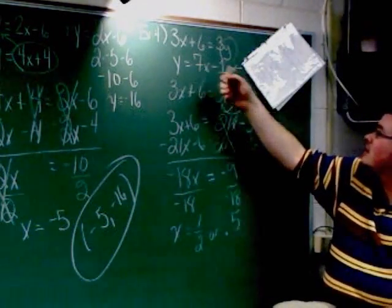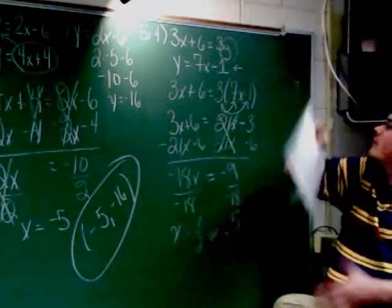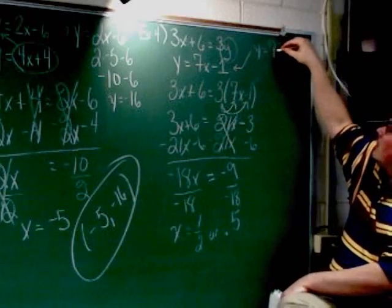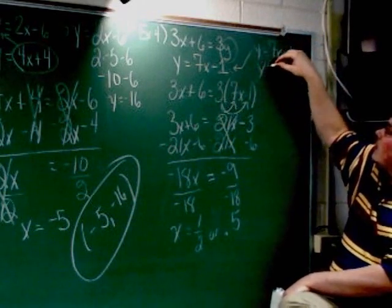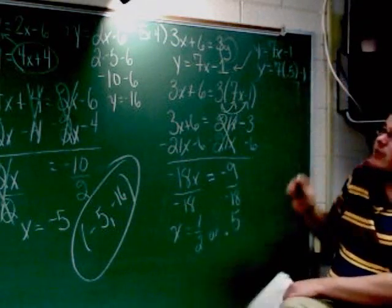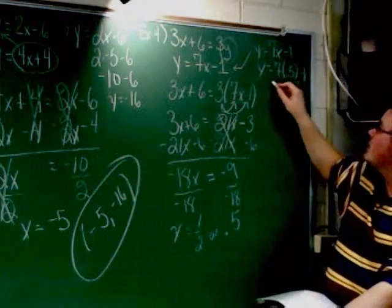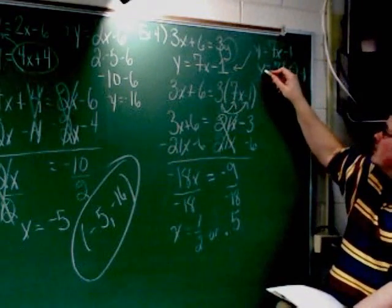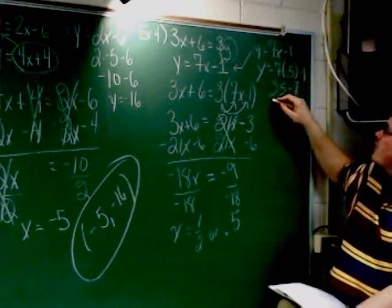All right. So I'm going to change x into a half. 7 times 0.5 minus 1. Half of 7 is 3.5. So I've got 3.5 minus 1, which is 2.5. 2.5.